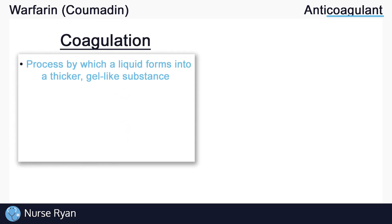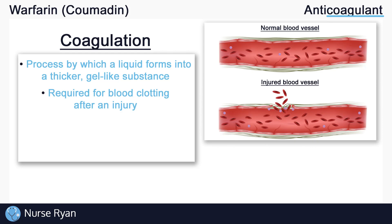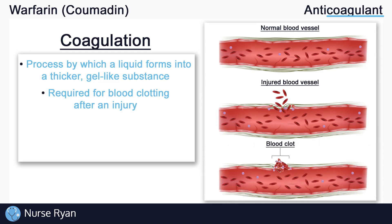Coagulation is the process by which a liquid — in this case our blood — forms into a thicker gel-like consistency. Coagulated blood is how blood clots are formed. Now in many cases we need our blood to clot; for instance, if you get injured, even something small like a paper cut, you need your blood to clot in order to stop the bleeding.